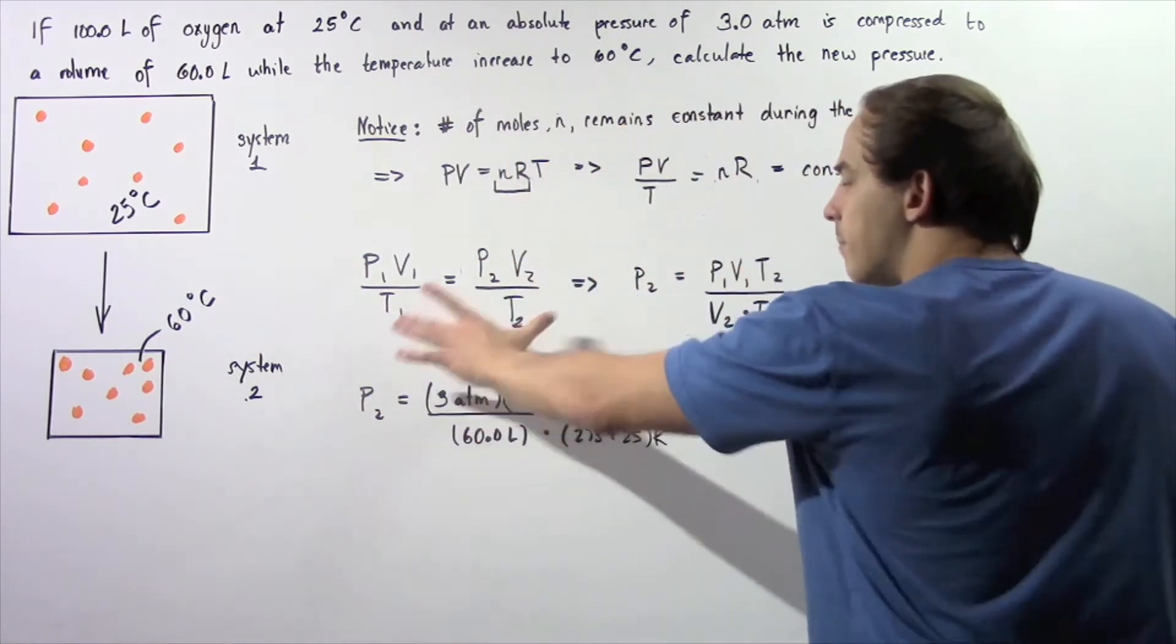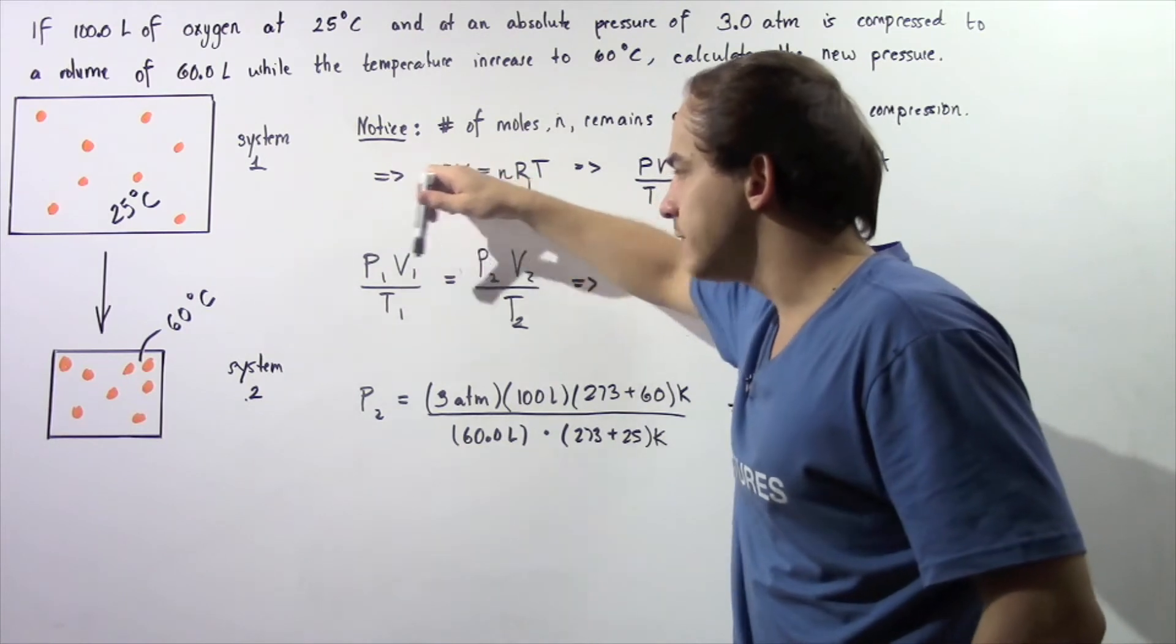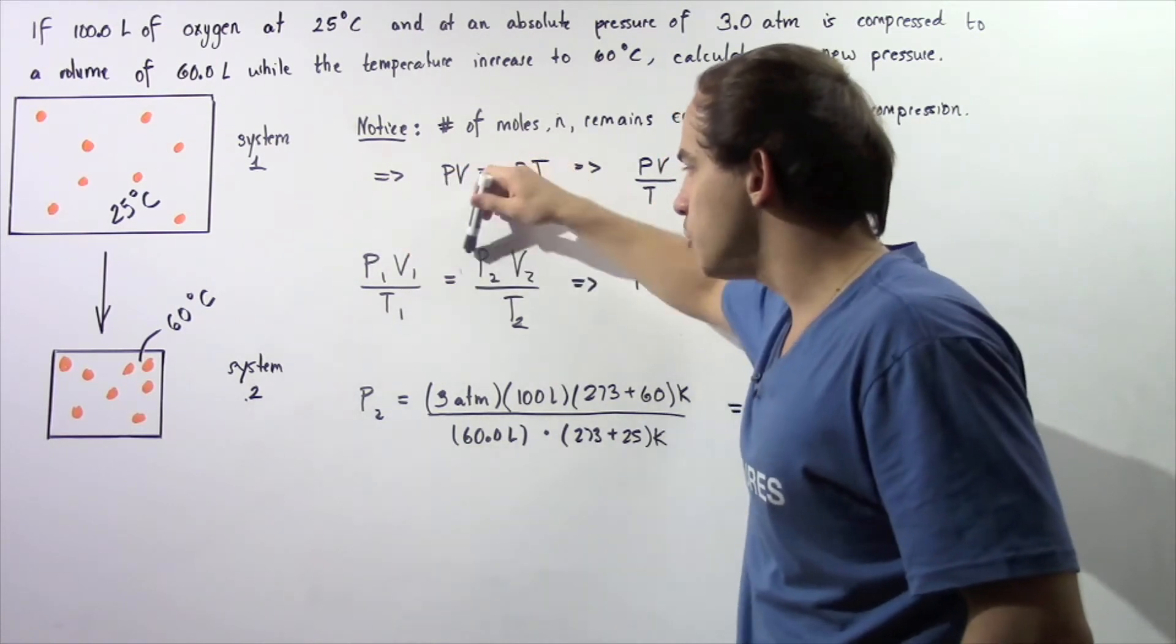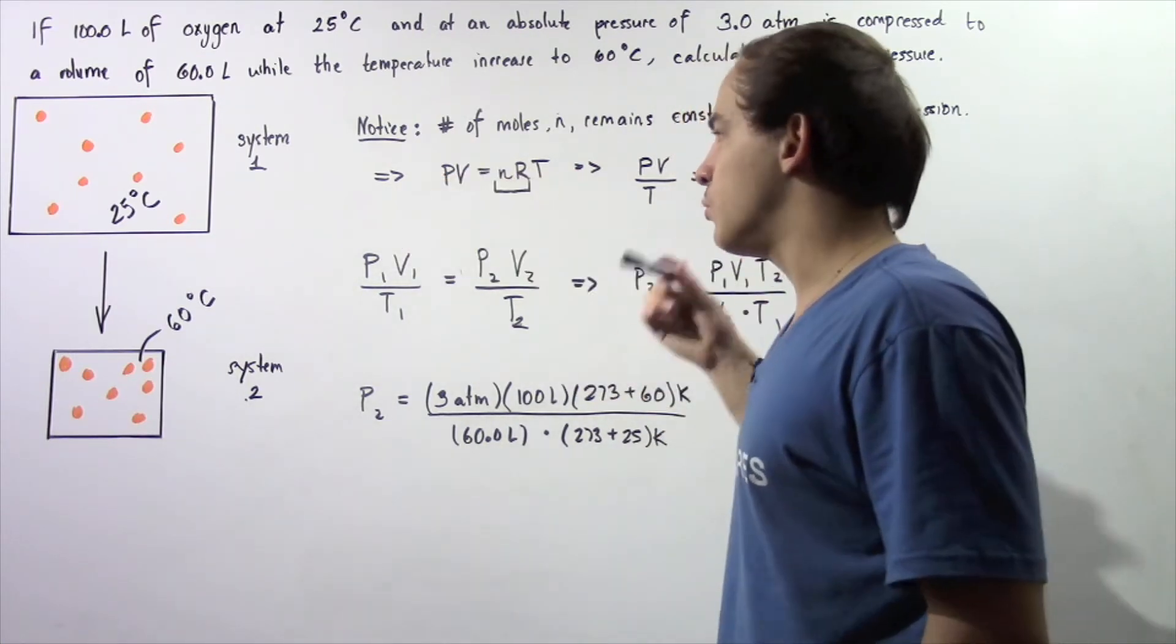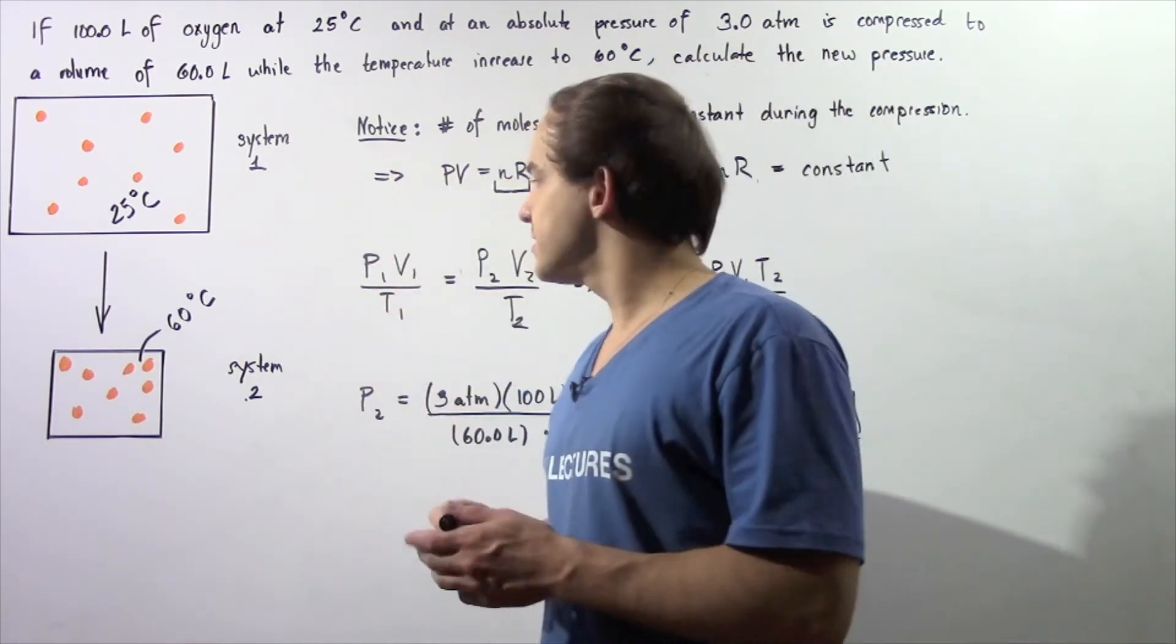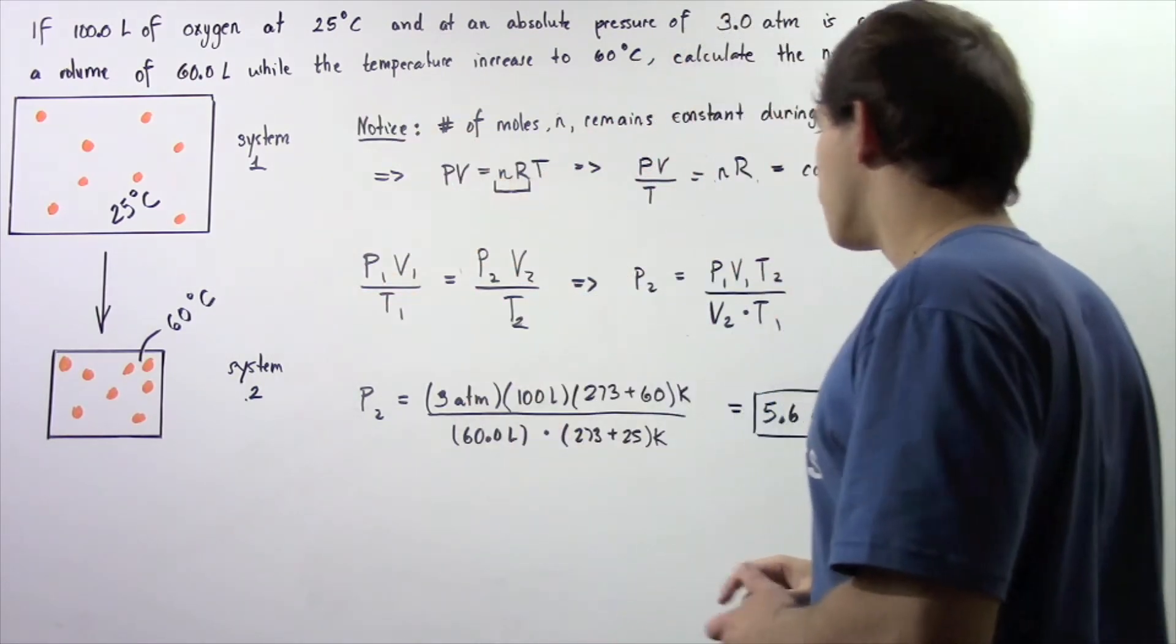And that is described by the following equation: P1V1 divided by T1 is equal to P2V2 divided by T2, where this number simply represents the number of the system. So one is system number one and two is system number two.